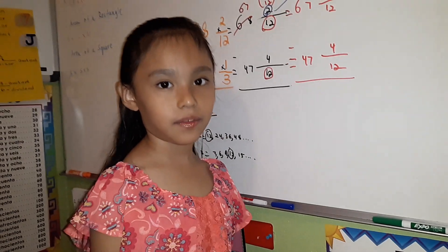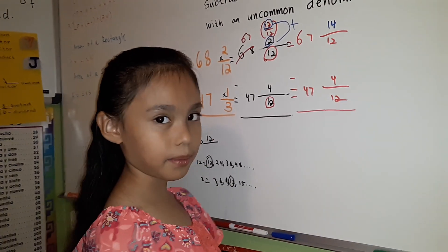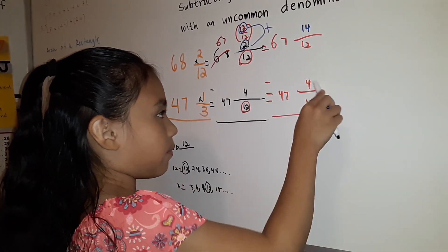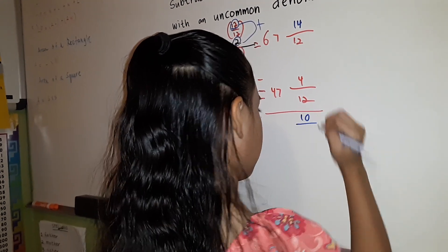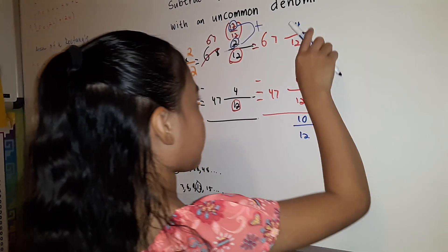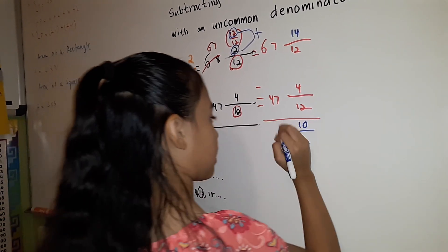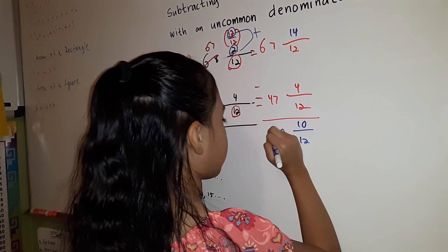Finally, we can subtract the fractions. You can only subtract the numerator and you can bring down the denominator. 14 minus 4 equals 10. Bring down denominator 12. 7 minus 7 equals 0. 6 minus 4 equals 2.